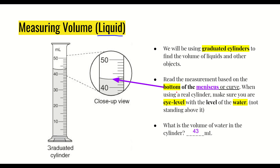Read the measurement based on the bottom of the meniscus. The meniscus is the curved surface of the water in a narrow tube — you actually read from that lowest point. When using a real cylinder, make sure you are eye level with the water, not standing above it, for a more accurate measurement. For the example shown, the volume is 43 milliliters: starting at 40, we count up 1, 2, 3 intervals, landing at 43. The unit is milliliters because it is a liquid.